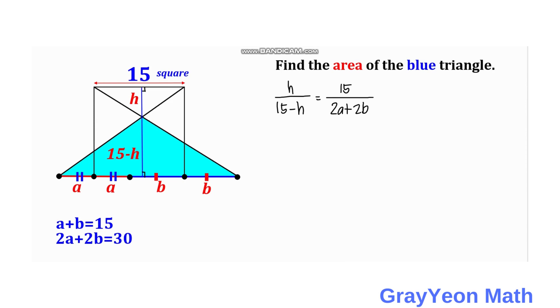So since this 2A plus 2B is actually equal to 30, we can simply replace it by 30. And we make this 1 half. And therefore,